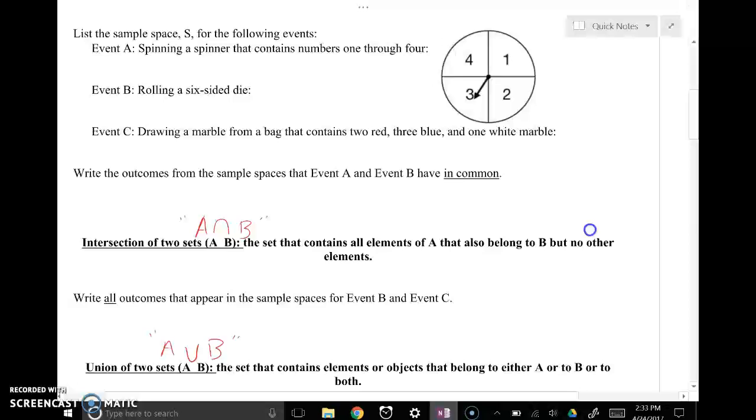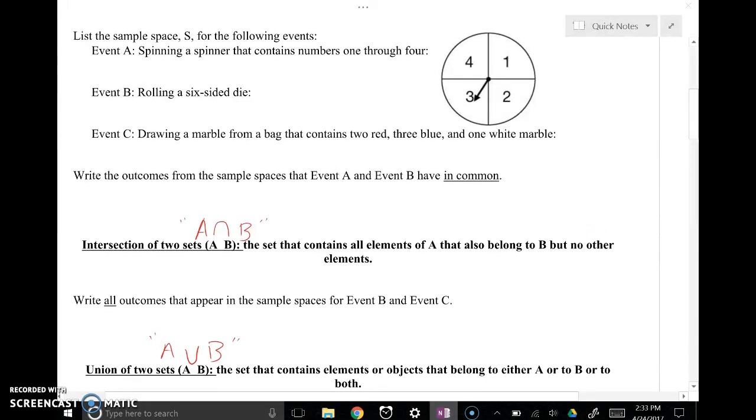Continuing to keep this all in perspective for us. So list the sample space for the following events. That means if I spin this spinner, my options are 1, 2, 3, or 4. Those are my four options that when I spin the spinner I could possibly get. So in event one, spinning a spinner that contains a number 1 through 4, that's going to be 1, 2, 3, or 4.